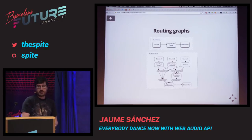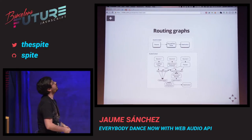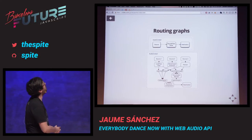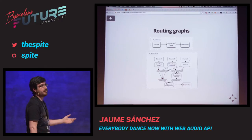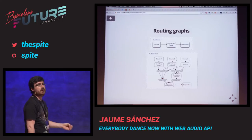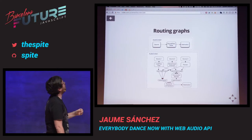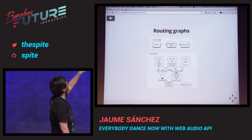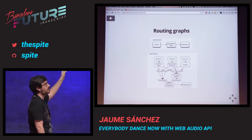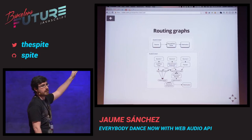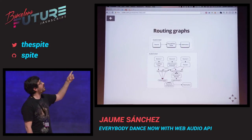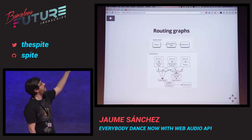These are some examples of routing graphs. The one at the top is a very basic one: there's a source connected to a bi-quad filter, which is a second-order filter, and it goes to the destination, which is usually the speakers. The one at the bottom is a way more complex system with three sources, several distortions. It creates two paths — one is the dry part that's unprocessed, and the other is the wet part with a convolution applied — and then it all goes into the destination. So basically you have to get your system clear in your head, and then that's the graph you're going to implement.